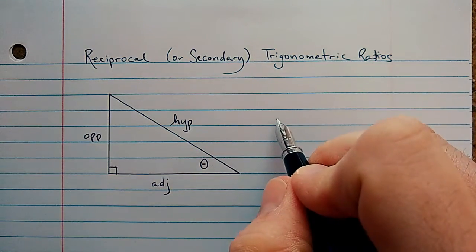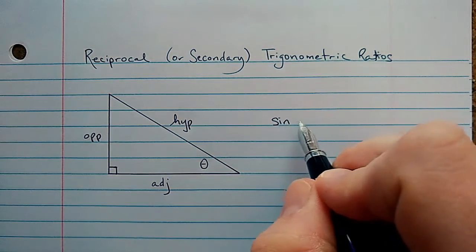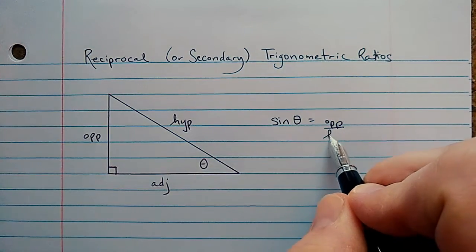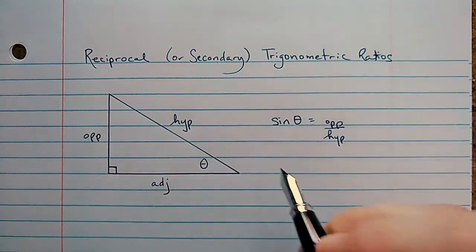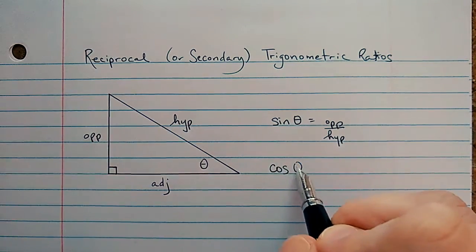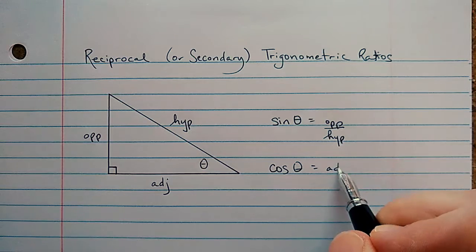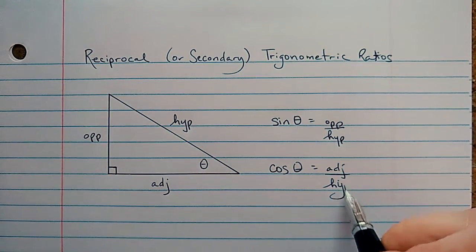And so you should already be familiar with these ratios. The sine of theta is the opposite side length divided by the hypotenuse side length. The cosine of theta is the adjacent side length divided by the hypotenuse.